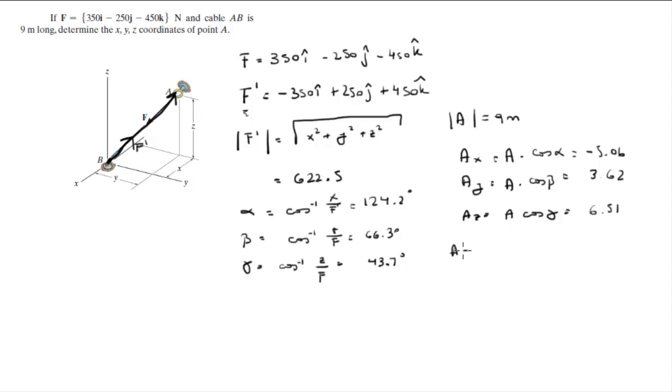So the cartesian vector form comes out to be negative 5.06i plus 3.62j (there's a pointer here) plus 6.51k. So this is the cartesian vector form.